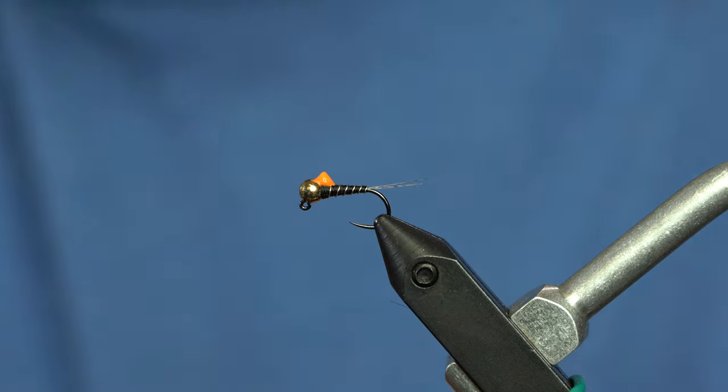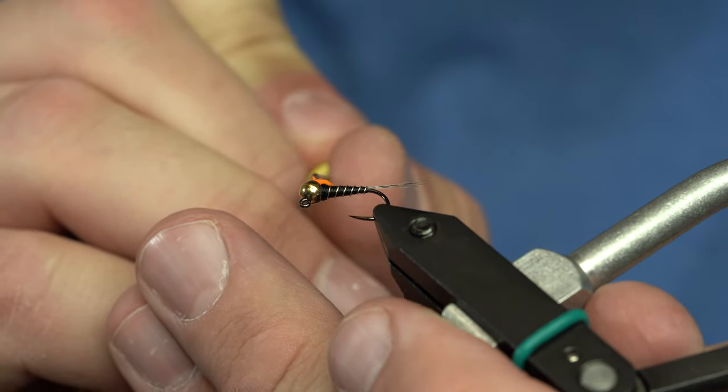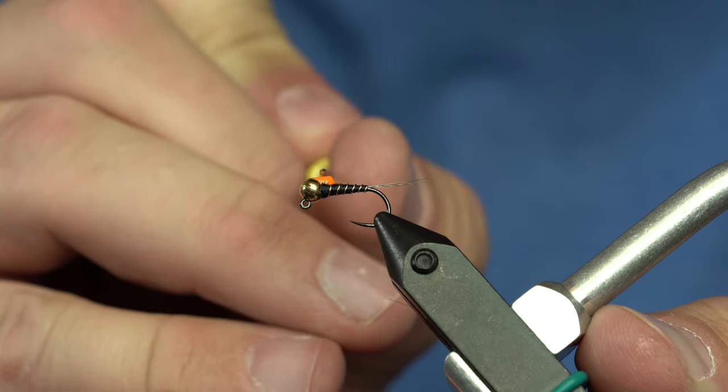It's a pretty thick resin, so we're going to dollop it in there, get it inside the slot of the bead, and then just kind of tease it back to where we want it.